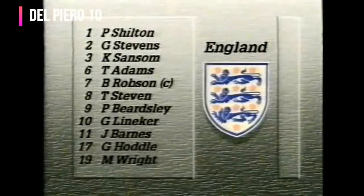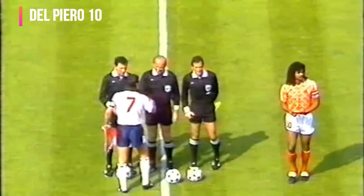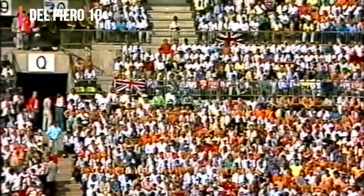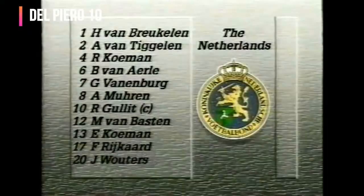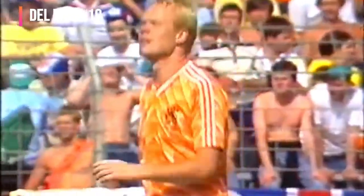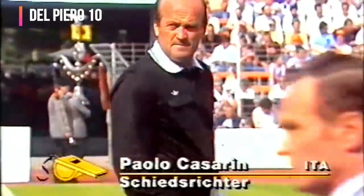England have made two changes: Glenn Hoddle starts in place of Neil Webb, and Trevor Steven comes in for Chris Waddle, who is a substitute. David Watson wasn't fit, so Bobby Robson persevered. Holland have brought in Marco van Basten and left out young John Bosman. The midfield change sees Erwin Koeman, number 13, the elder brother of Ronald Koeman, brought in, with winger John van Schip left out.